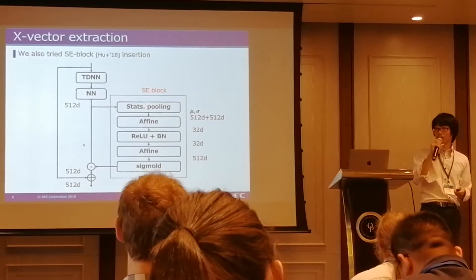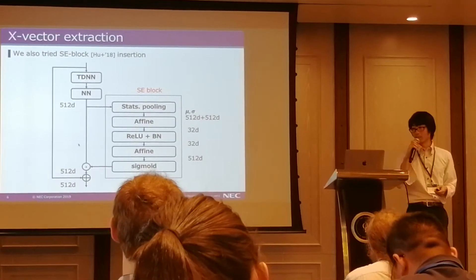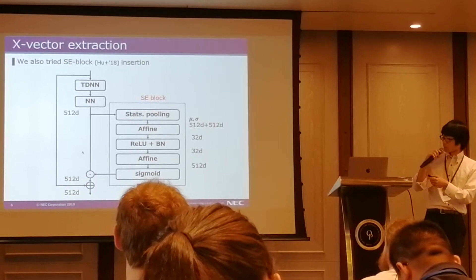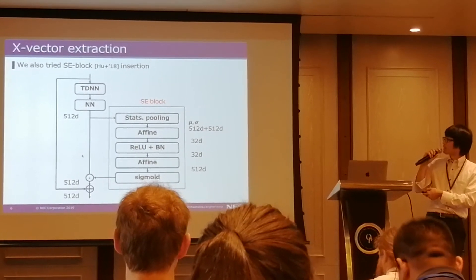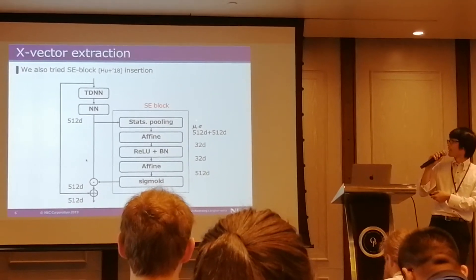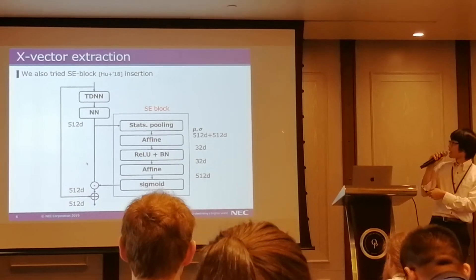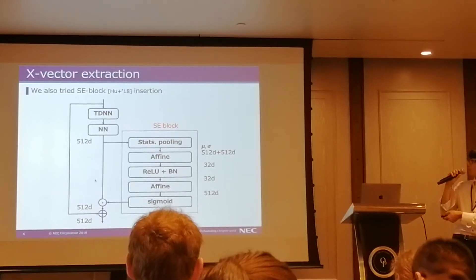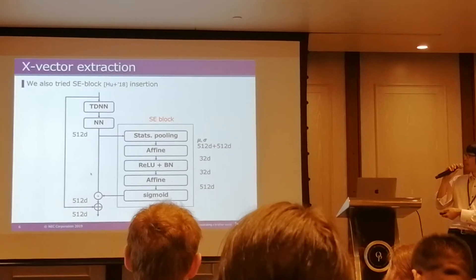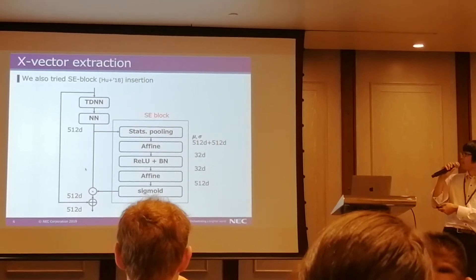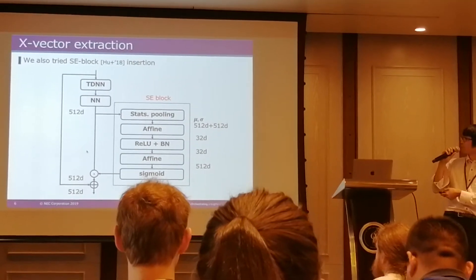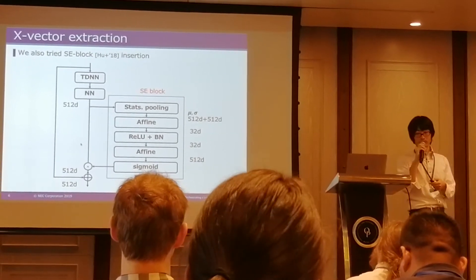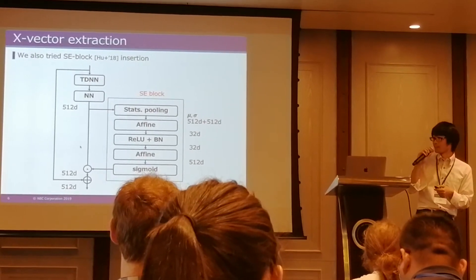We also tried SE block insertion. The SE block uses a statistics pooling mechanism — it outputs global context, for example, the mean and standard deviation of all frames. Using this global context, it outputs values from 0 to 1 and multiplies them with the original output from the layer. So this SE block is used for soft channel selection. We expect this to enhance the network structure.